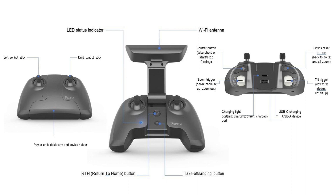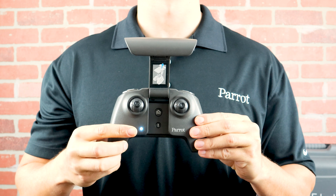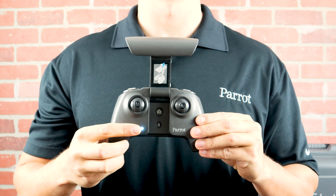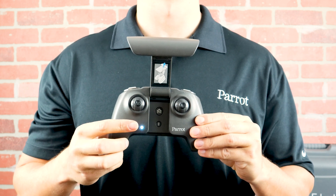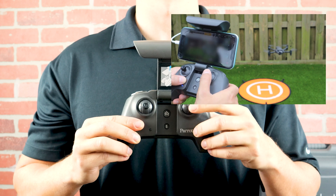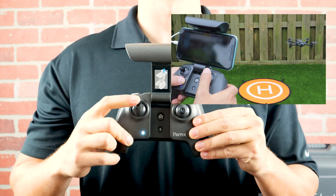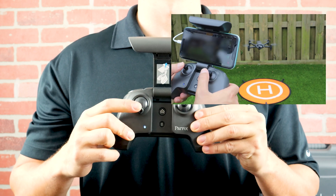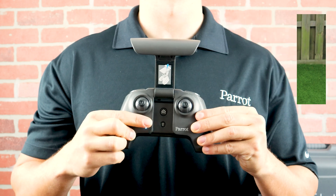To begin, let's go through the controls on the SkyController 3. Power on the SkyController 3 by opening it up. The LED will indicate the system is powered on and looking for the aircraft. The right control stick will control direction or pitch and roll. The left control stick will control elevation, rotation, or yaw of the aircraft.